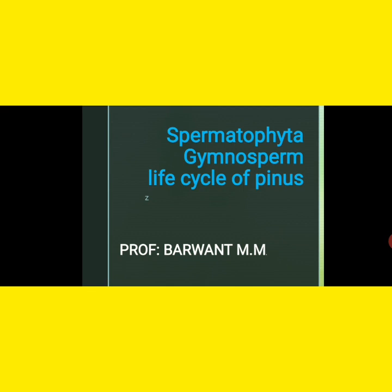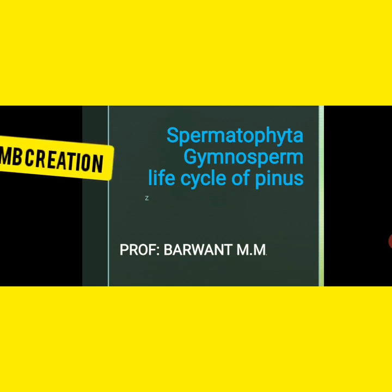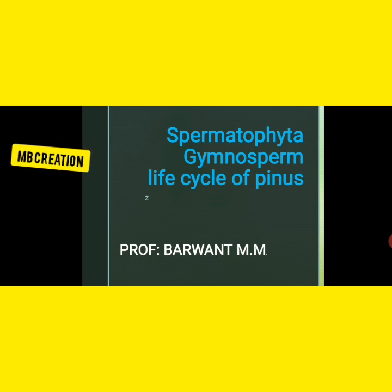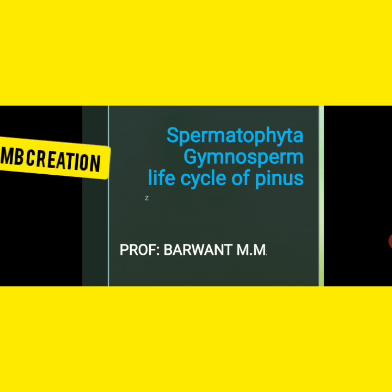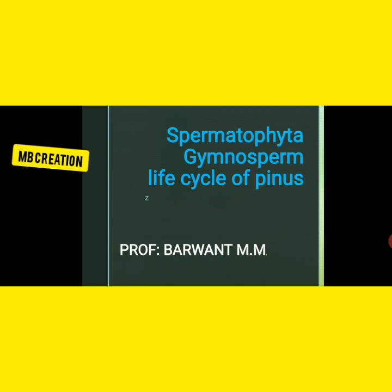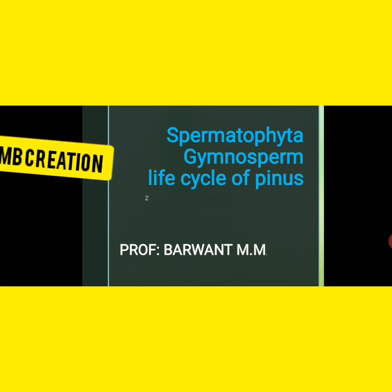Spermatophyta is classified into two groups: angiosperm and gymnosperm. Angiosperms are flowering plants in which the ovule is enclosed in an ovary. In gymnospermic plants, the ovule is directly exposed to the environment. That is a special characterization and evolutionary trend of Pinus. Before learning further, we should know what the life cycle is.